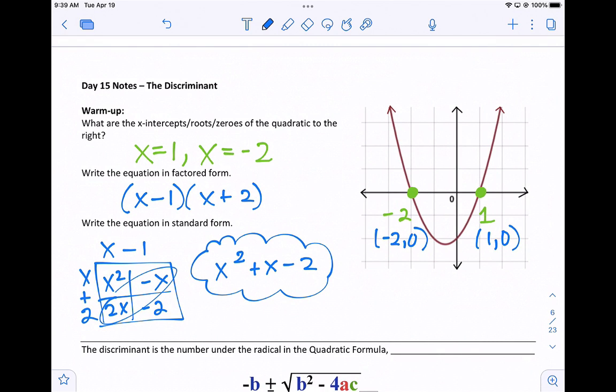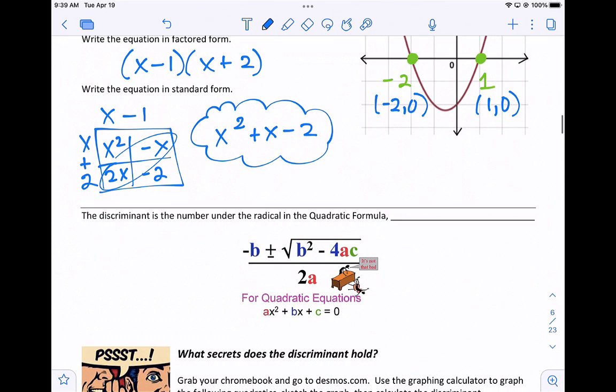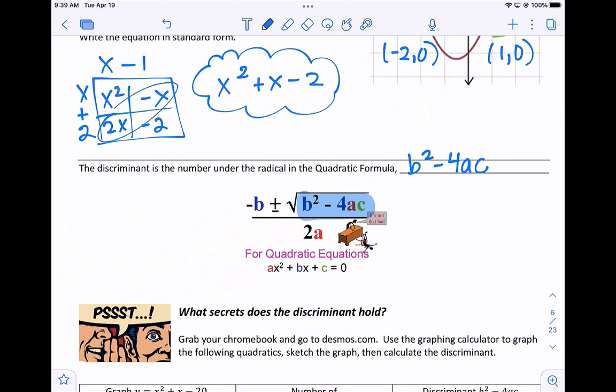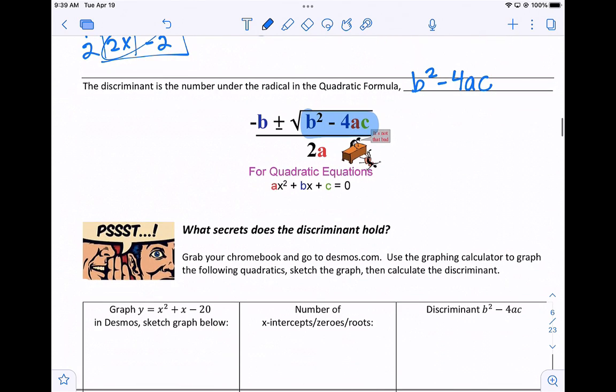So today we're going to focus on the discriminant. The discriminant is the number under the radical in quadratic formula. So it's this part right here under the square root sign. It's the b squared minus 4ac. And today we're going to learn what does that discriminant tell us about the graph? What secret does it hold?